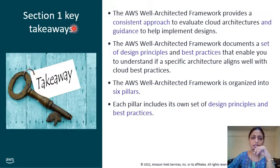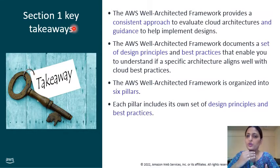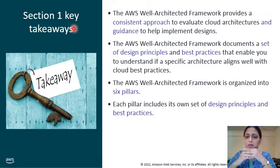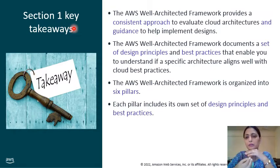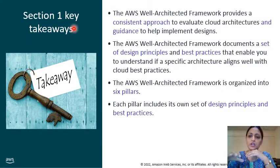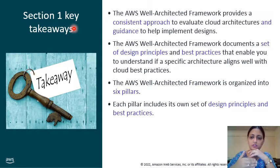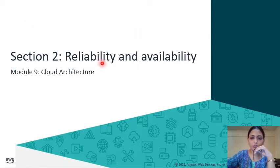Now it's time for Section 1 key takeaway. The AWS Well-Architected Framework provides a consistent approach to evaluate cloud architecture as well as guidance to implement a design. This document is a set of design principles and best practices that enable you to understand what practices your system needs to implement on the cloud. This architecture consists of six pillars, which we discussed in this section. Next is Section 2, all about Reliability and Availability.